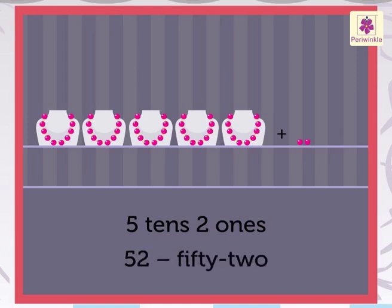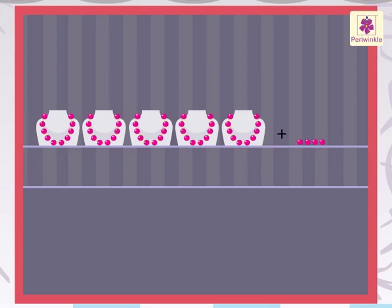Five tens and three ones is 53. Five tens and four ones is 54. Five tens and five ones is 55.